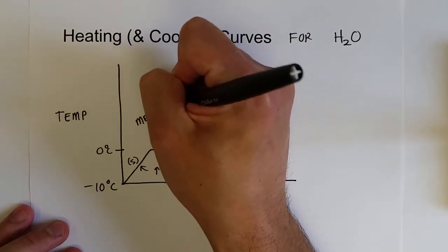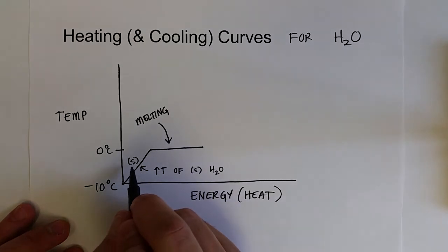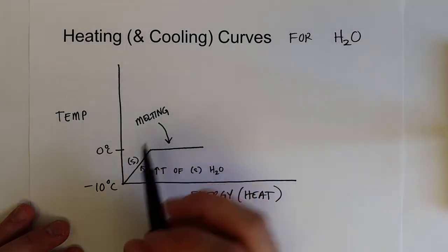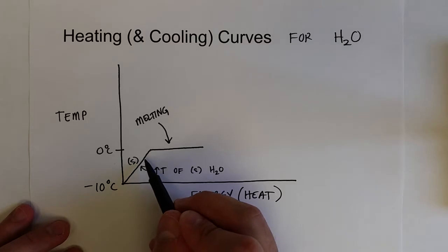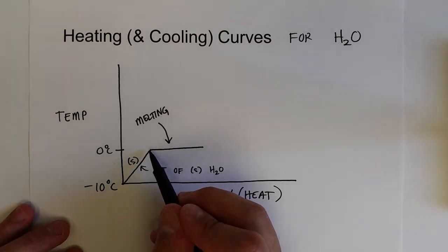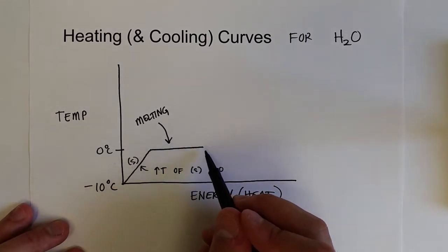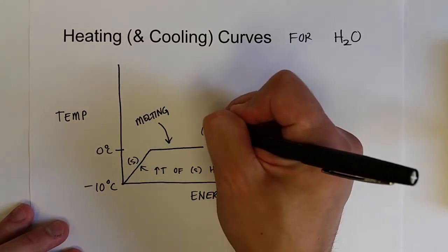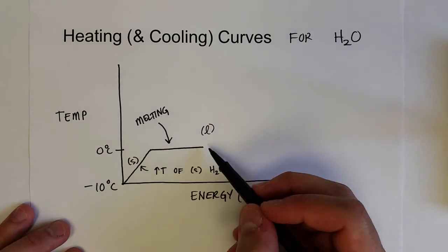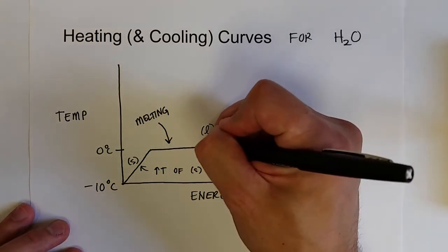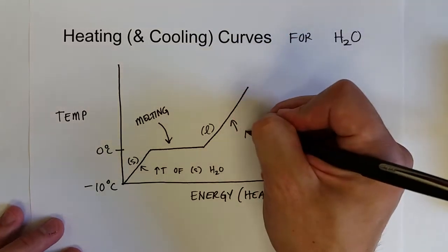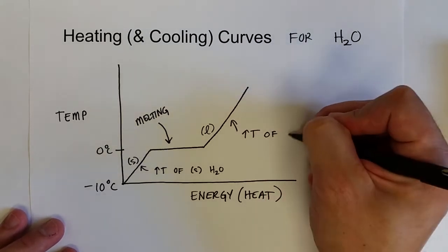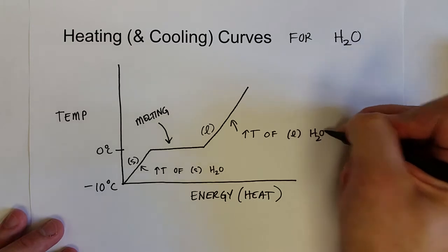All of that energy is going into converting solid phase water into liquid phase water. So initially at negative 10 degrees Celsius, the energy increases the temperature of the solid water until it hits the melting point at 0 degrees Celsius. Then additional energy goes into melting the substance — going from a solid to a liquid. As soon as the entire sample is in the liquid phase, the temperature of the liquid will start to go up again.